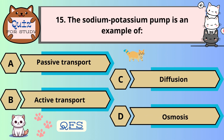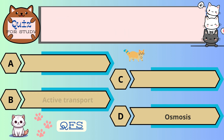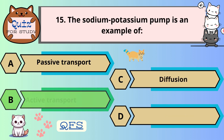Number 15. The sodium-potassium pump is an example of — the correct answer is B. Active transport.